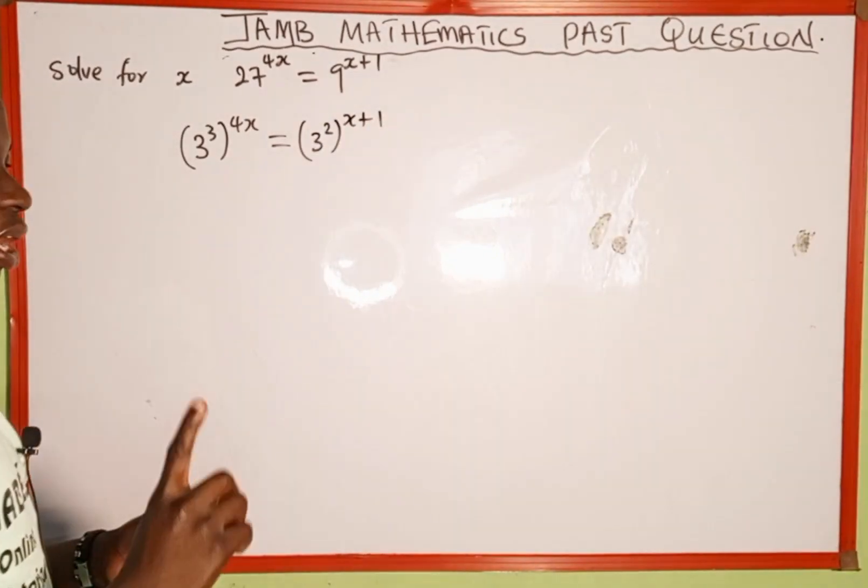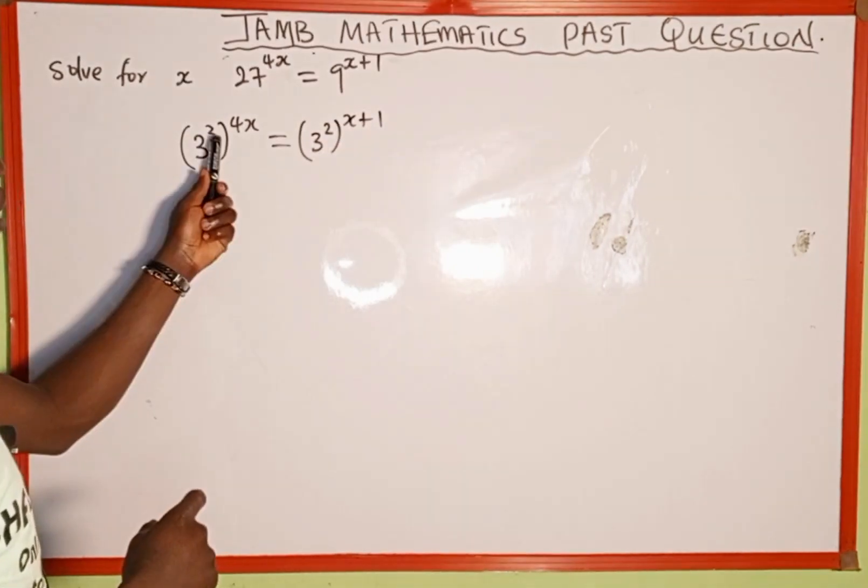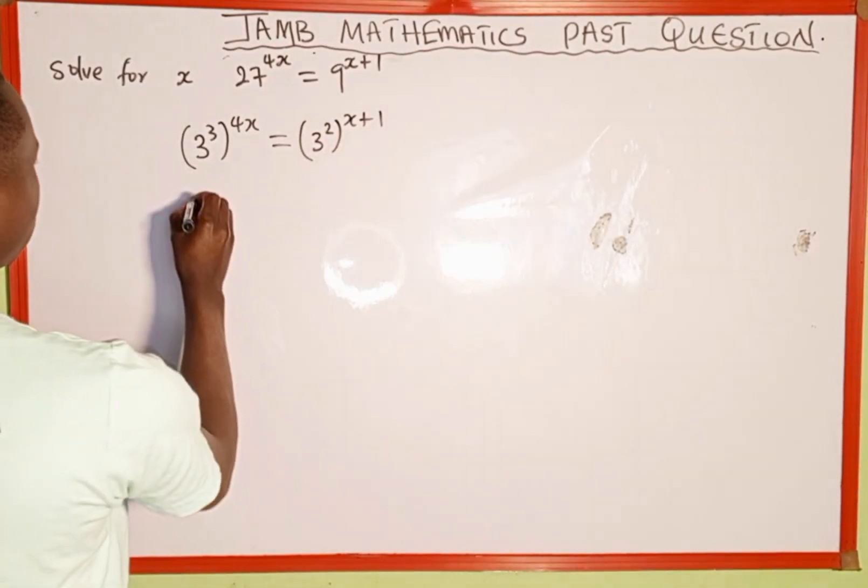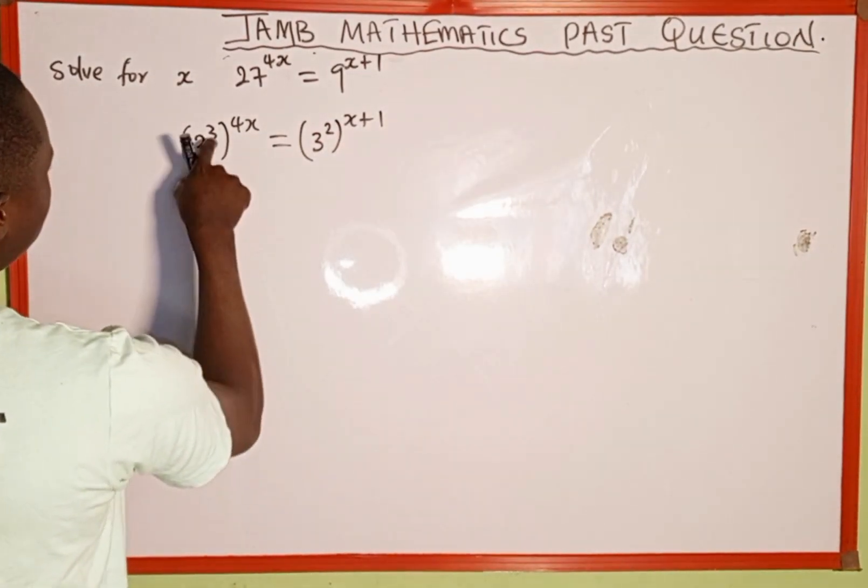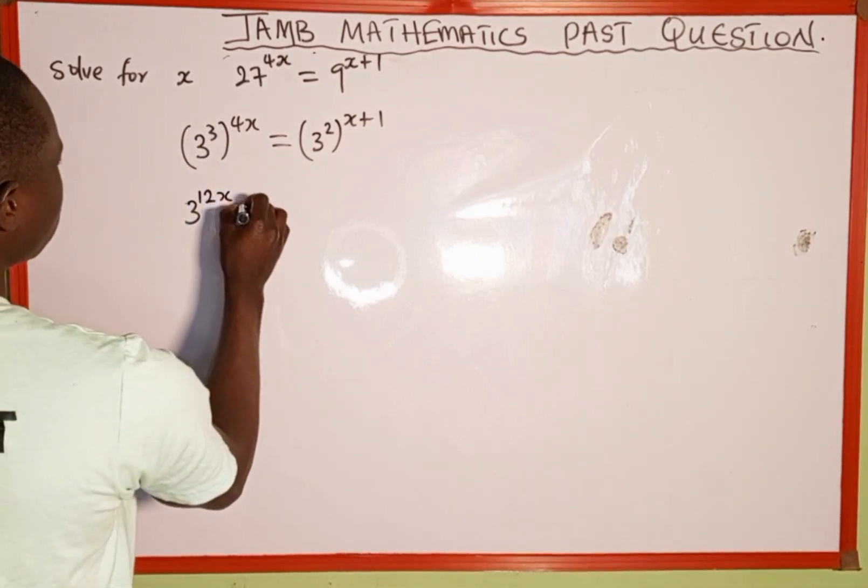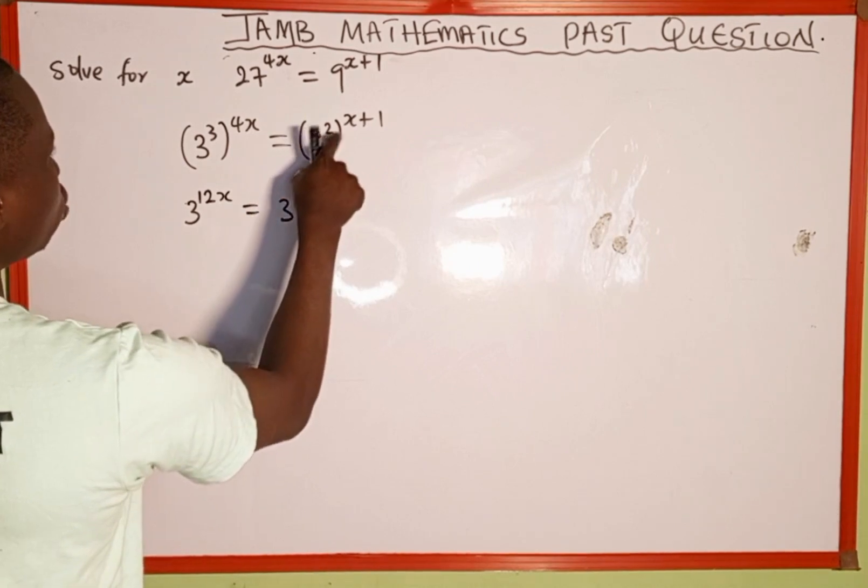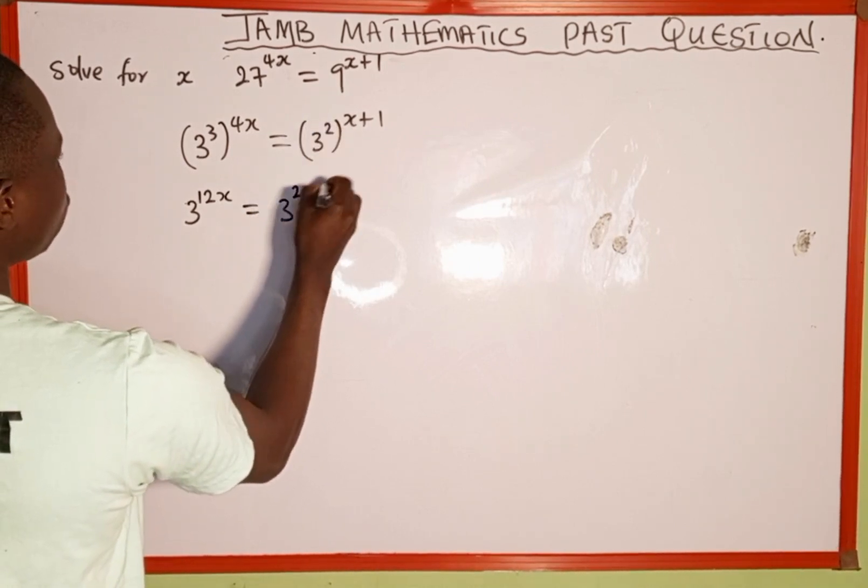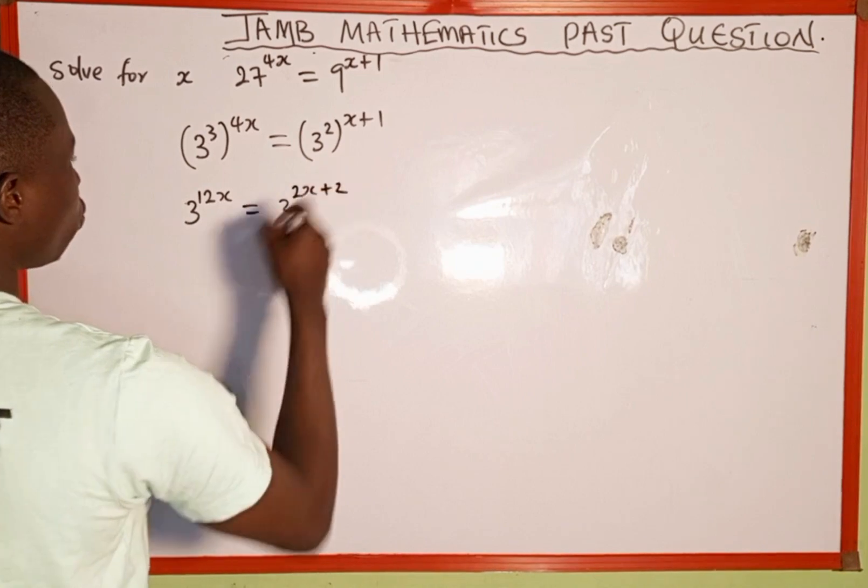The next thing we're going to do is recall our power rule of indices. We can multiply the two powers together. This is going to be 3 raised to the power of 3 multiplied by 4x, giving us 12x, which equals 3. Then 2 multiplied by x gives us 2x, and 2 multiplied by 1 gives us 2.